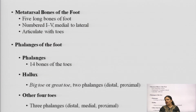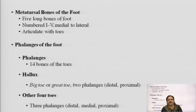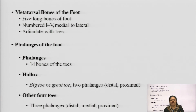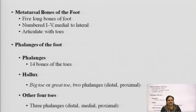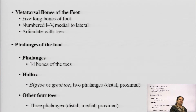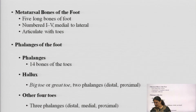The metatarsals are 5 long bones in the foot area, numbered 1 to 5 from medial to lateral, and they articulate with the toes — the leg fingers — scientifically known as the phalanges of the foot. We have 14 phalanges in the toes. The hallux is the big or great toe, which has 2 phalanges: distal and proximal. The remaining four toes in each foot have 3 phalanges: distal, middle, and proximal.